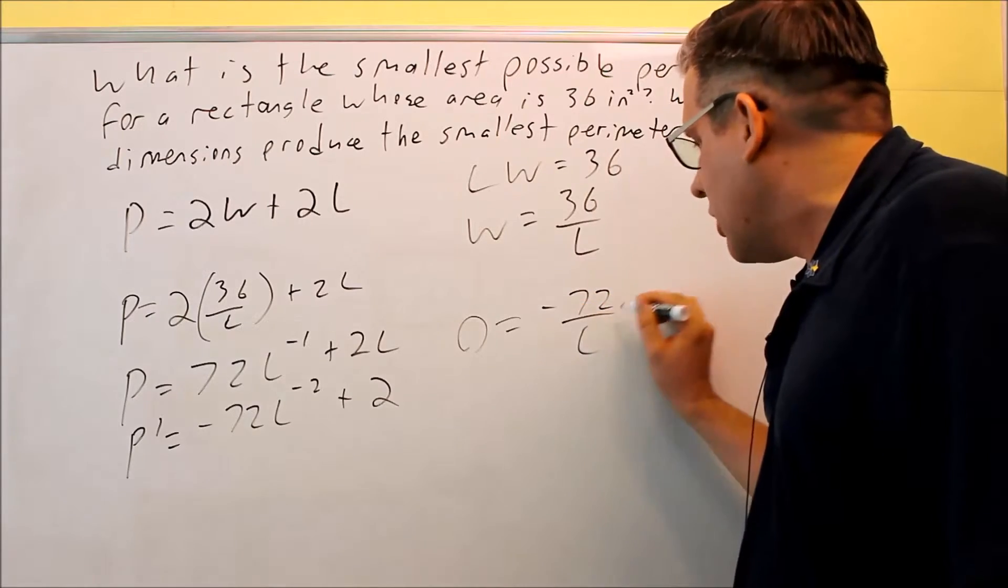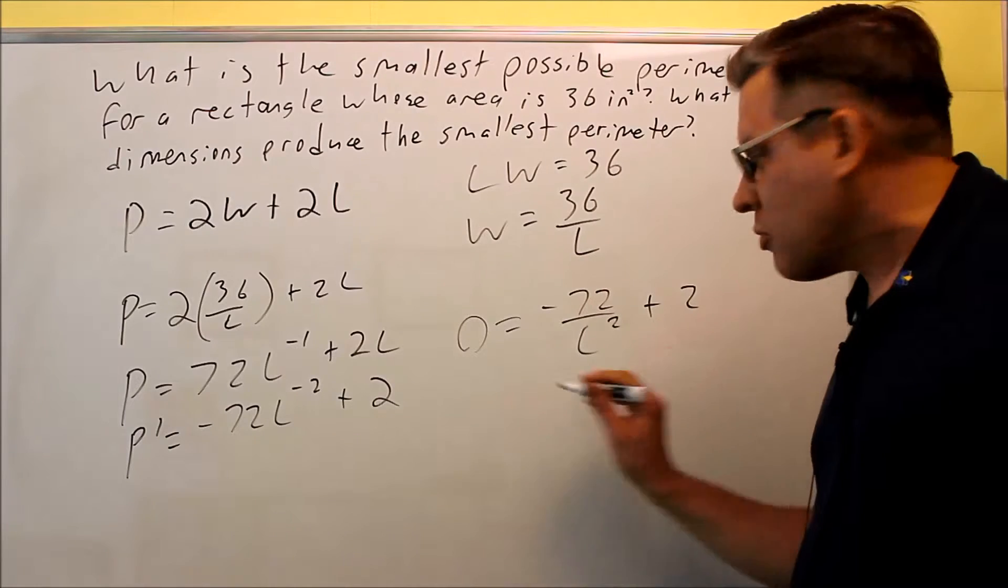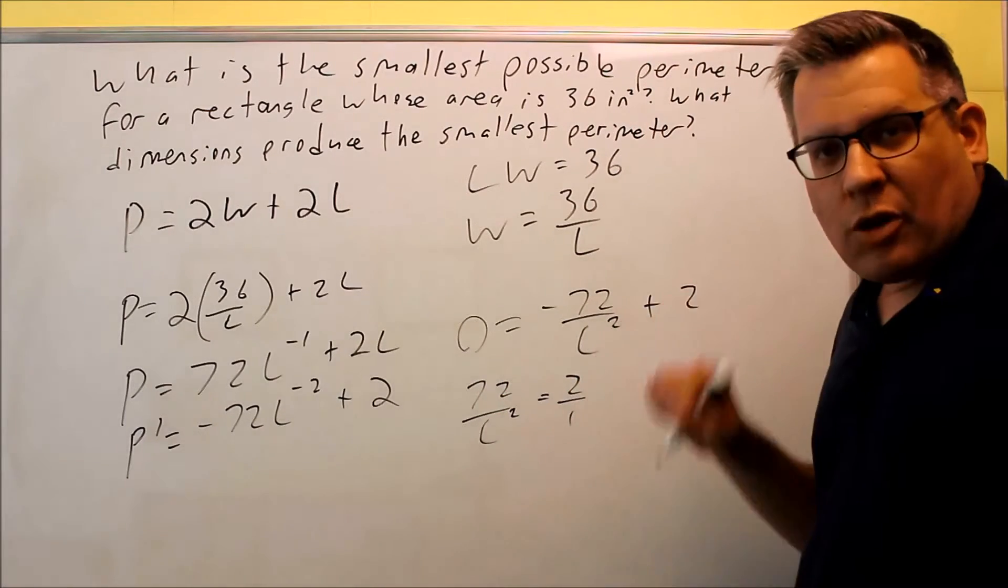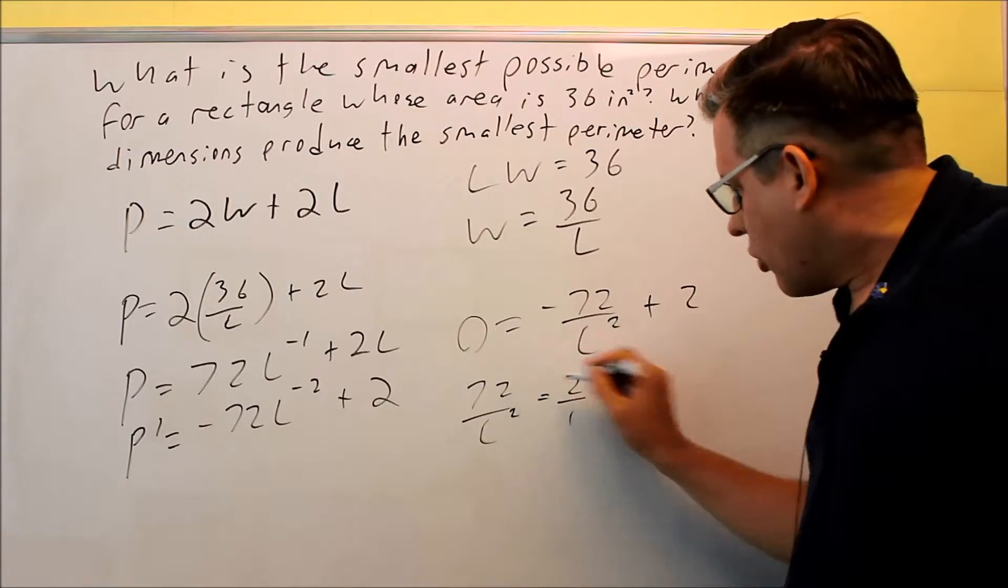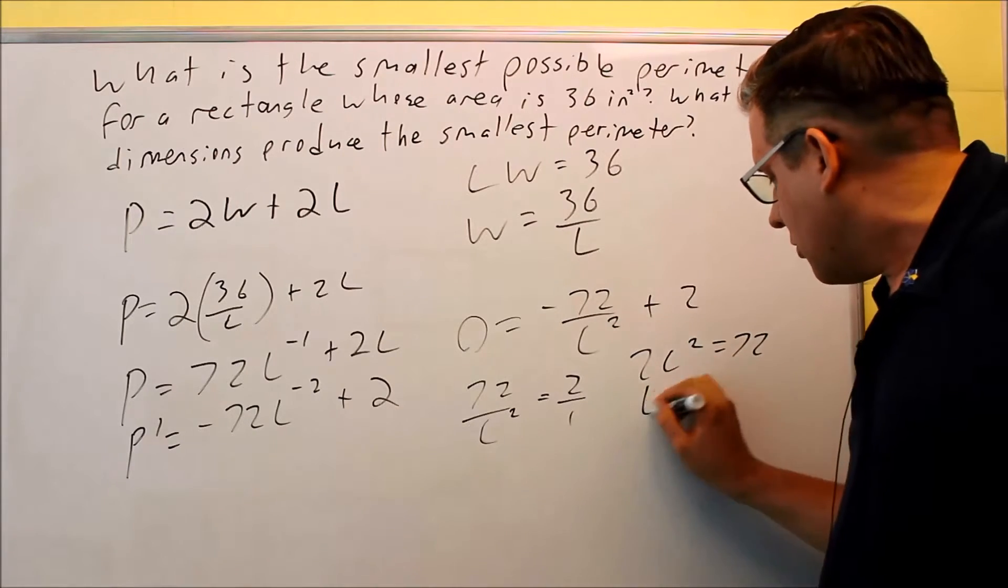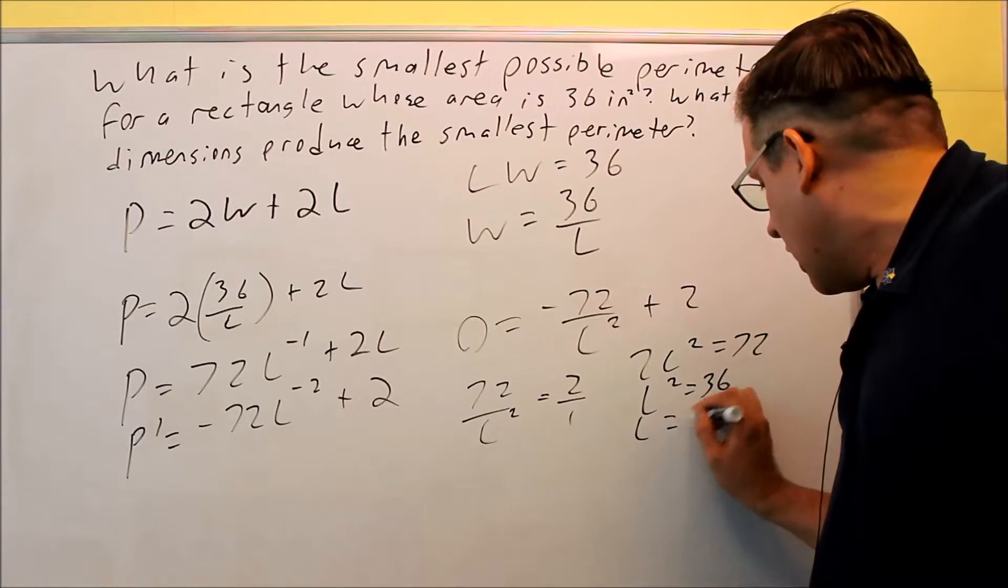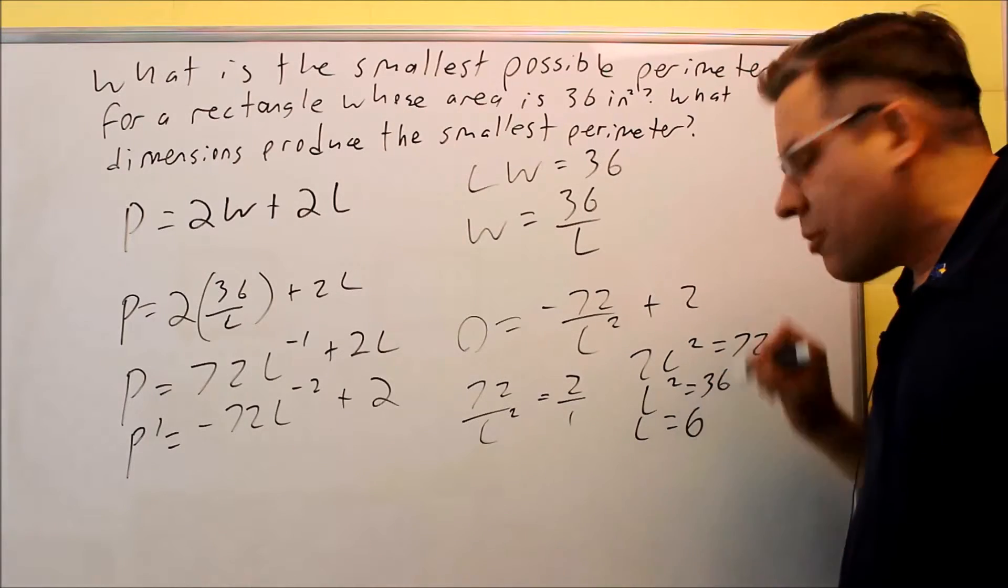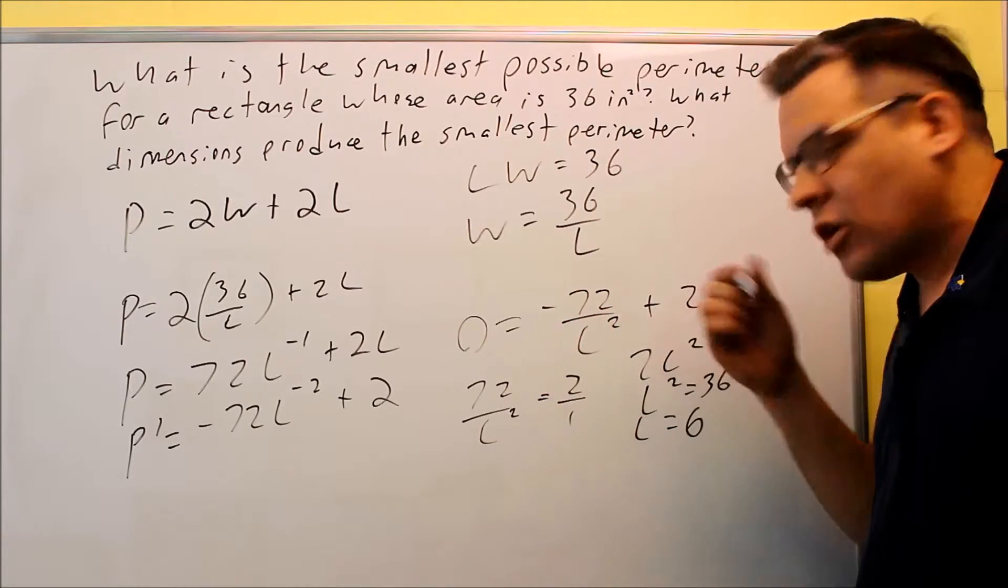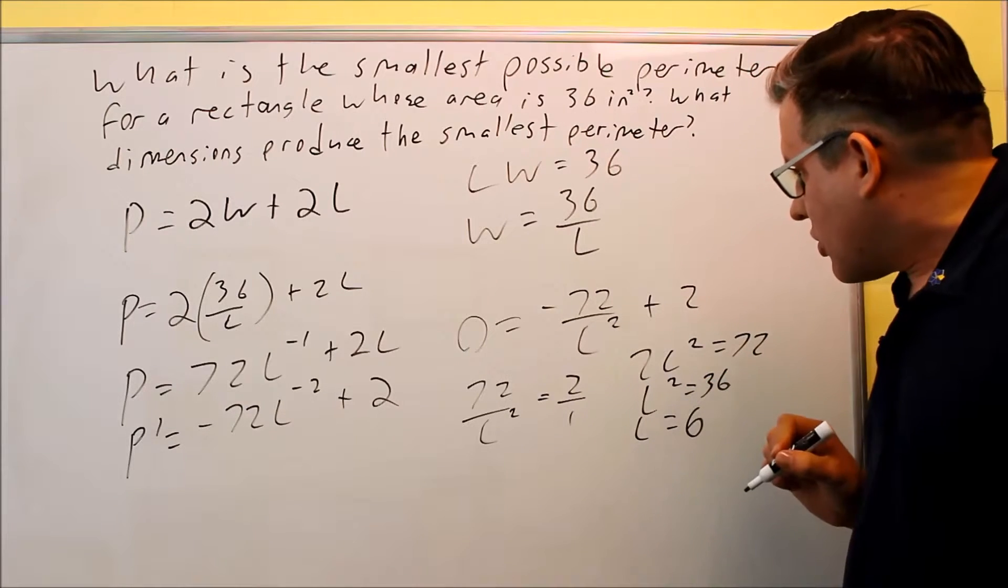-72/L^2 + 2 = 0. I'm going to move one of these terms over, so 72/L^2 = 2/1. Probably best to cross-multiply on this one. 2L^2 = 72. Divided by 2, L^2 = 36. Square root of both sides, you're going to get L = 6. Now you do get plus or minus 6, but because we're talking about a rectangle, you don't want to worry about a negative. So there's one of our dimensions. Your length has got to be 6.